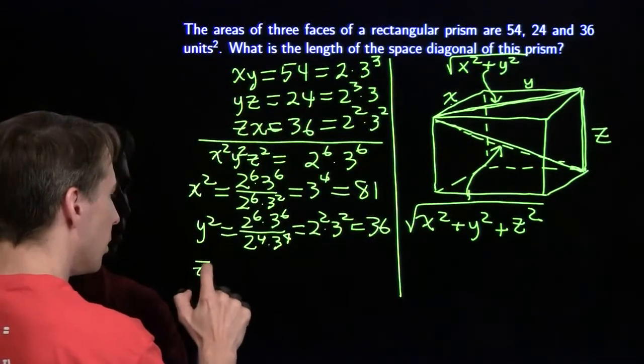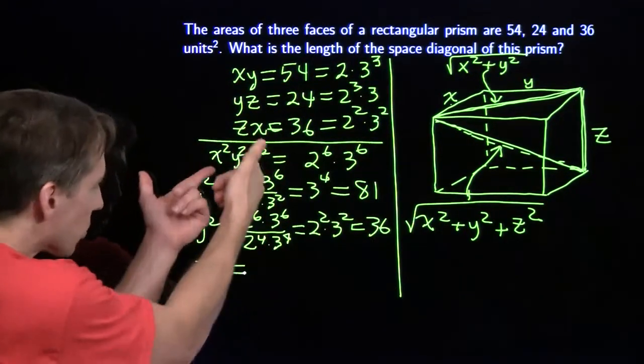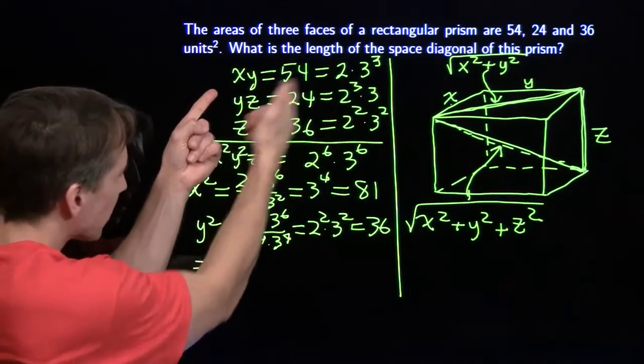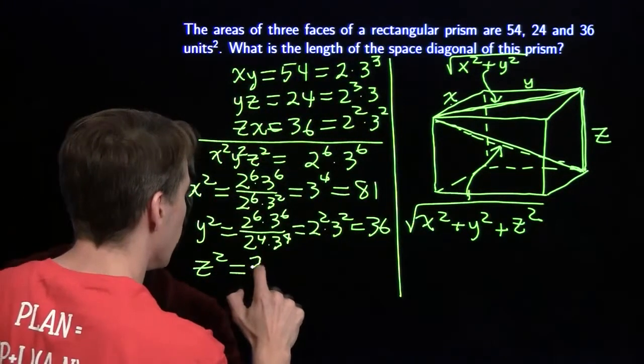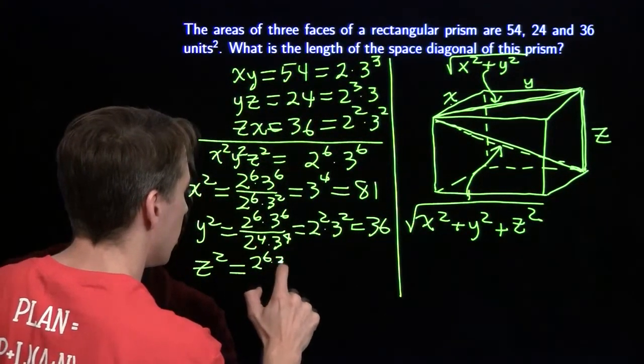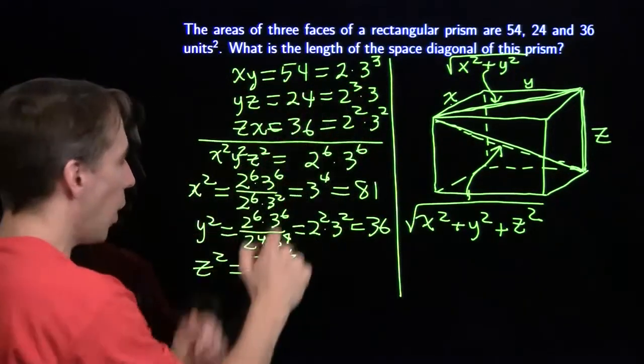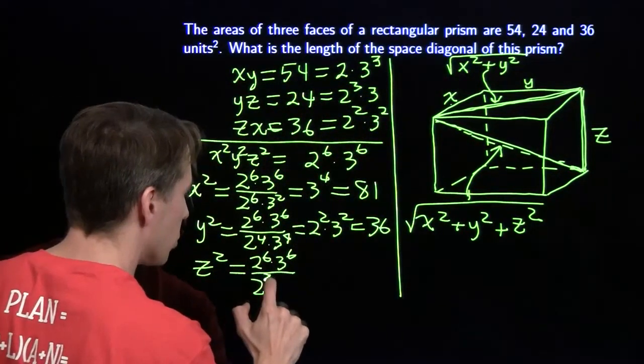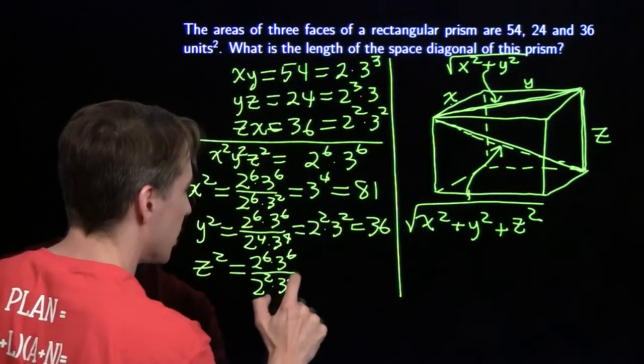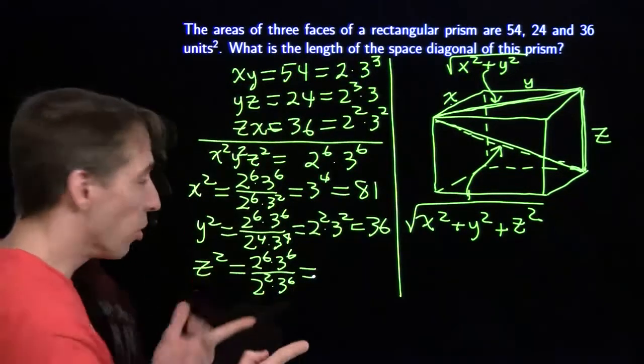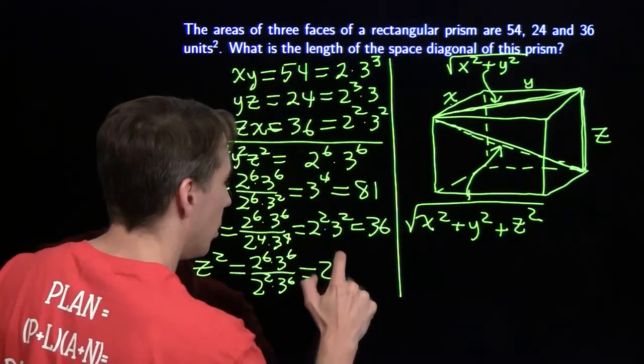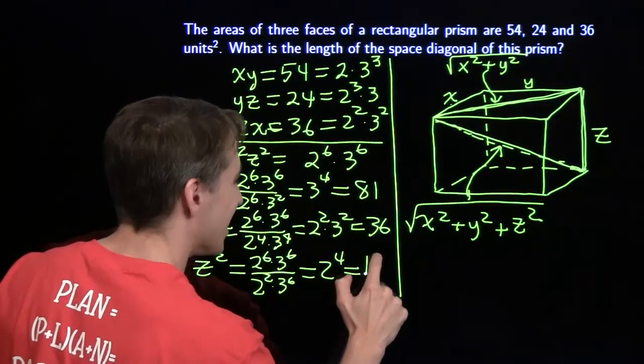And finally, I've got z squared. I need to divide out the xy squared. So I'm going to have 2 to the sixth, 3 to the sixth. I'm going to divide off the square of xy, the 2 squared times the 3 to the sixth. That's going to leave me 2 to the fourth, otherwise known as 16.